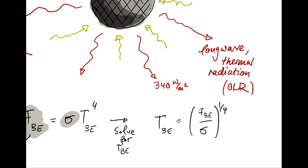So, let's solve that for TBE, which gives us temperature is FBE over sigma to the power of 1 quarter. FBE is 340 watts per meter squared, and sigma is 5.67 times 10 to the minus 8 watts per meter squared per Kelvin to the power of 4.